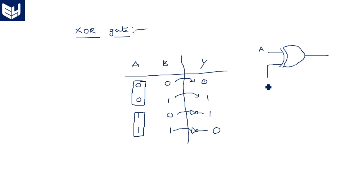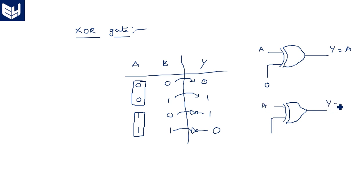So the XOR gate can be used as a buffer when one input is 0, or as an inverter when one input is 1. This is the meaning of the XOR gate. Using this concept, we are now going to design a binary adder which can also act as a subtractor.